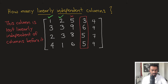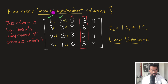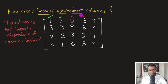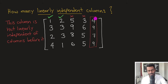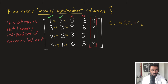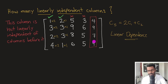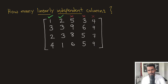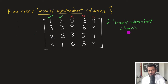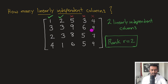We repeat the process for the fourth column, C4, and see that it is also linearly dependent on the columns before it — it's a combination of column 1 plus column 2. We mark it with a cross. The fifth column is similarly a combination of two times column 1 plus one times column 2, so it also gets an X. Based on this result, we have two linearly independent columns, and hence the rank of this 4×5 matrix is two.